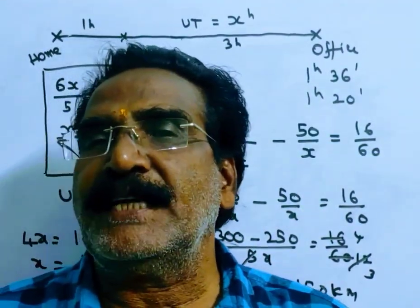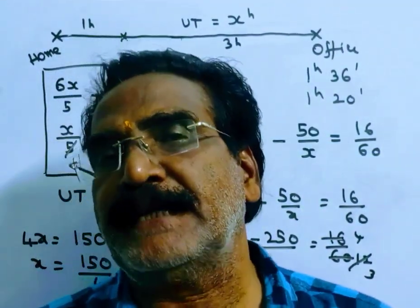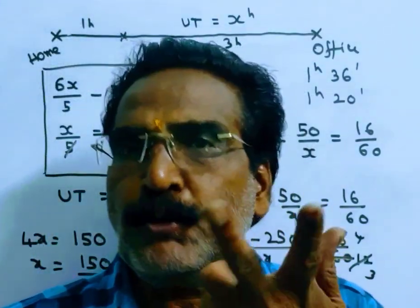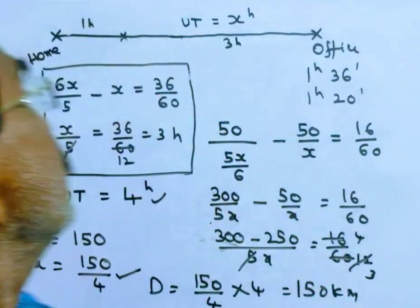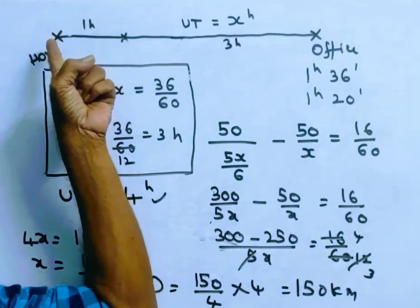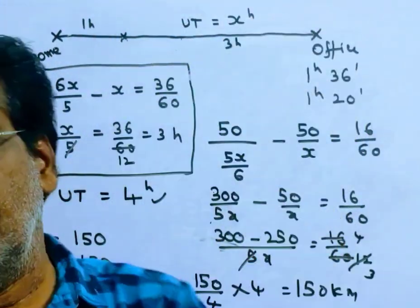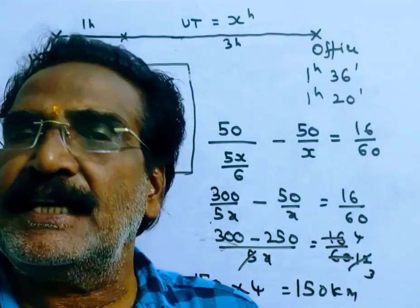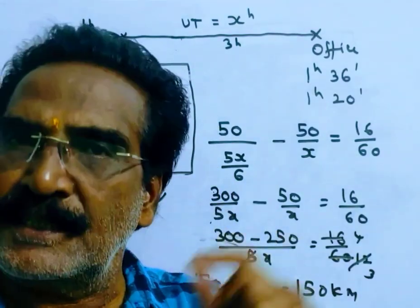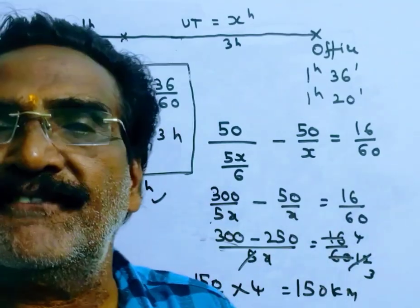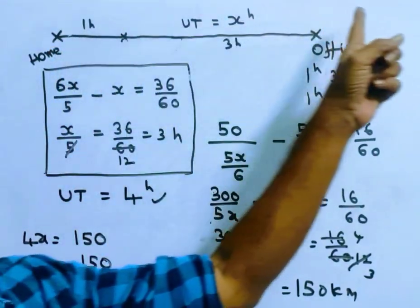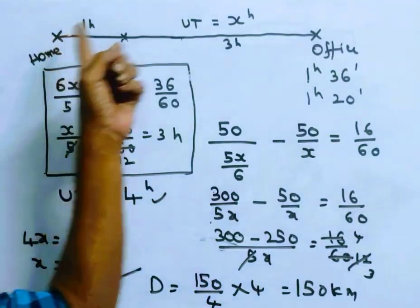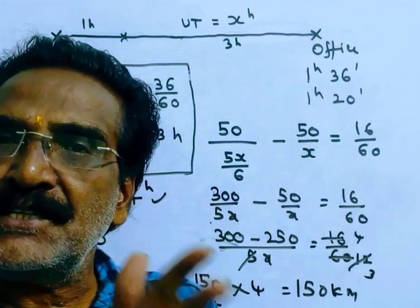Good morning friends. Please look at the next problem in time and distance — the problem is given in the description box, so please go through it first. We have to find the distance from home to office. Distance equals velocity multiplied by time, so first let us find the velocity and time, and then we can find the distance. Let us start by finding the time from home to office.